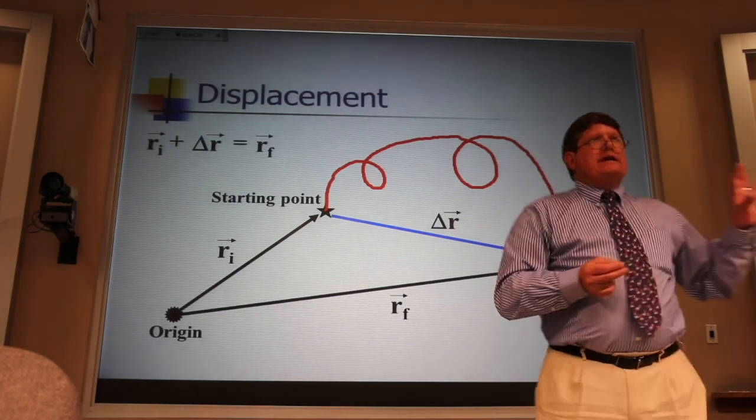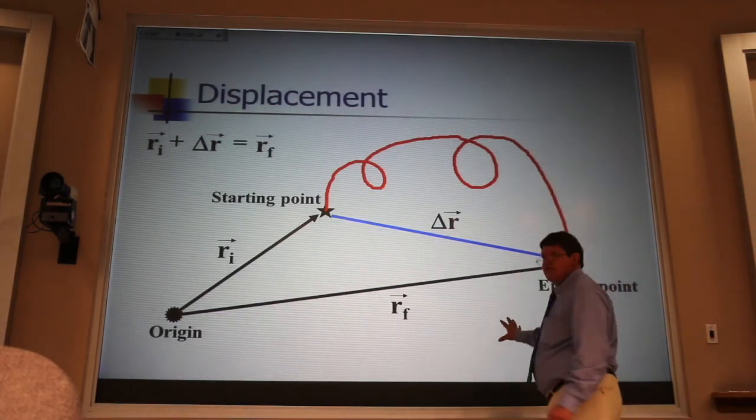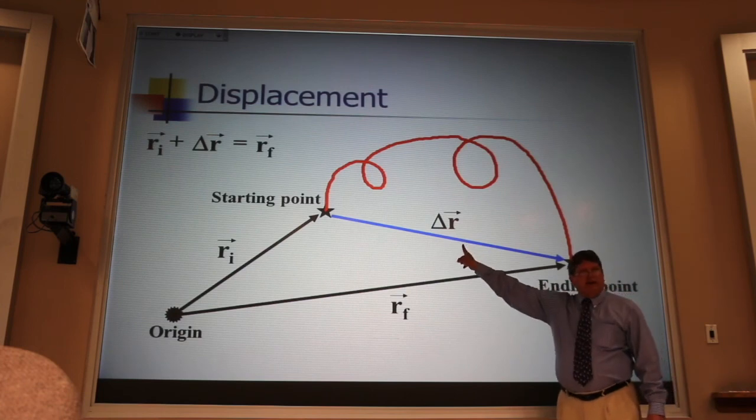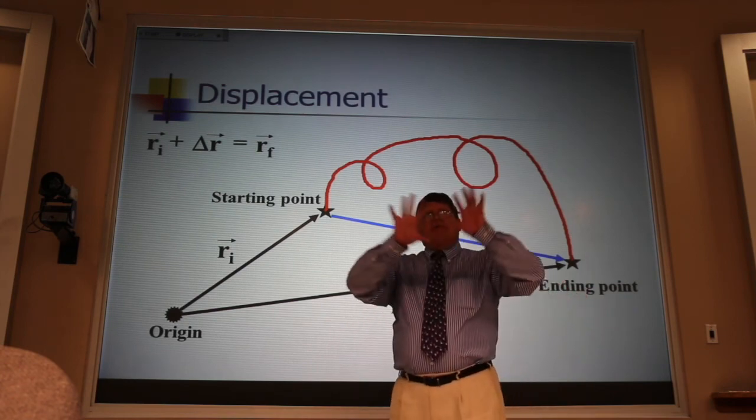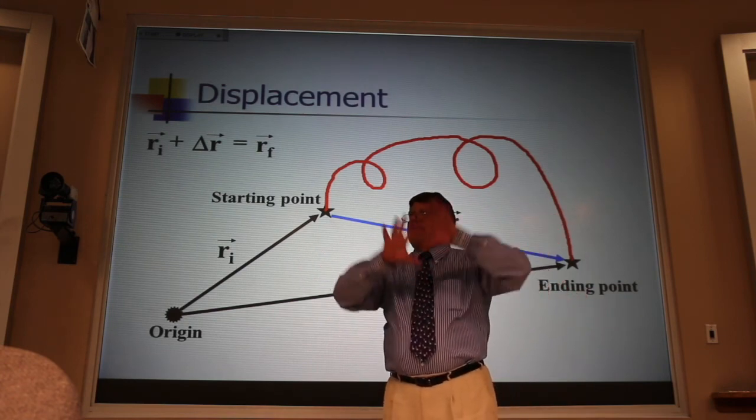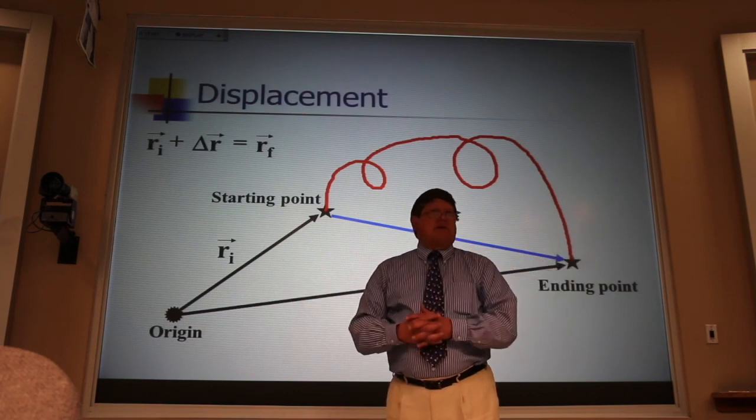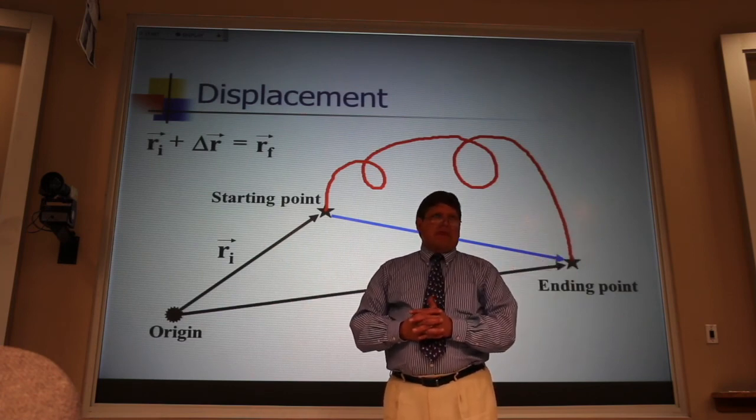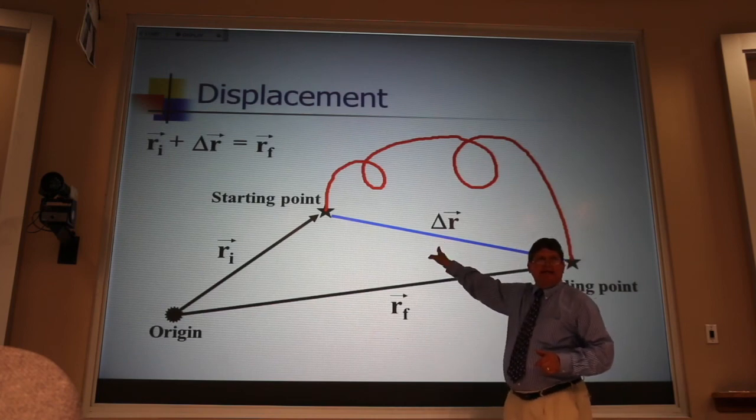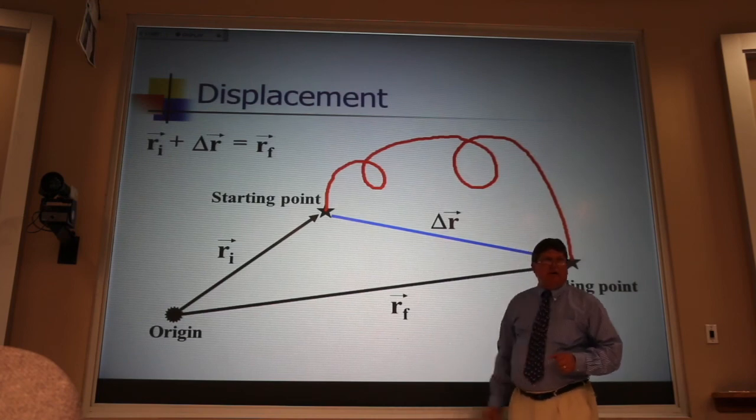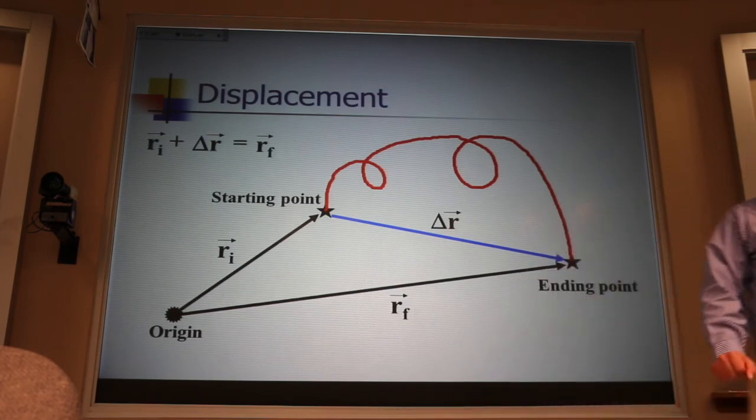That's important. Because these position vectors here are geography. We teach that in a different building. Okay, they're totally dependent on my coordinate system. This vector here, the displacement vector, is what we build all of kinematics on. And then on top of that, we put dynamics. We call that mechanics. And that's the foundation for physics. Okay, it's all built on that vector right there. And it's independent of the coordinate system. Okay, we're going to be using that a lot.